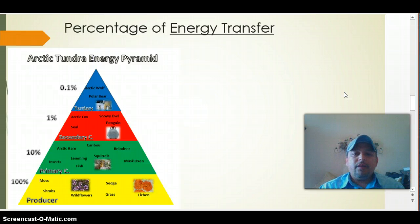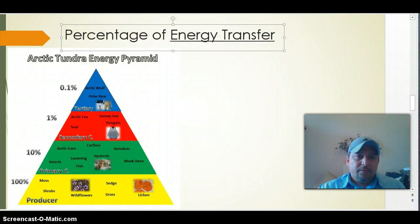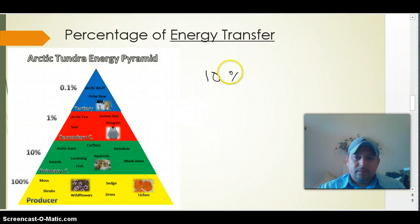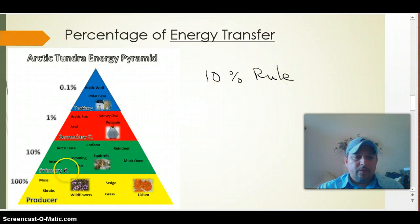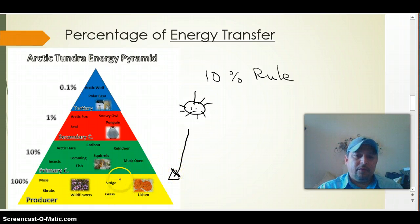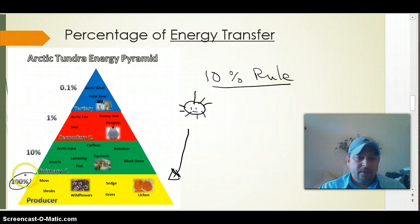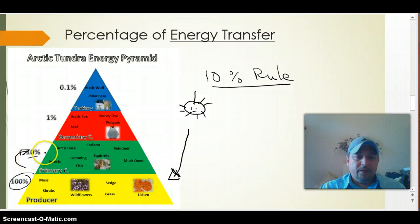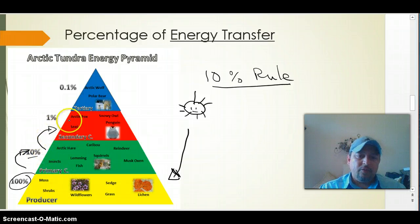There is a rule in energy transfer for these pyramids called the 10% rule. At the beginning, the energy captured by the producers represents 100% of all the energy available for the rest of the organisms. But according to the 10% rule, only 10% of that energy will be passed on to the next level. So only 10% of whatever amount at one level moves to the next.